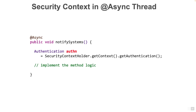But will this technique work from within the async method — in this example, the notifySystems method? Note that in the example, we are using the securityContextHolder class directly to get the authentication object and not autowiring it. The answer is no — the variable authN will be null. Recall that this method will be executed on a different thread. Spring Boot sets the authentication object of the user in a securityContext for the user handling thread, but by default this securityContext is not propagated to the thread which is executing the async method. That's why the authentication variable will be null.